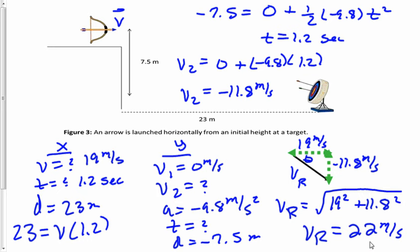Here's one thing, here's our second thing. So then I'll say the tangent of theta will equal our y over our x, so 11.8 divided by 19.